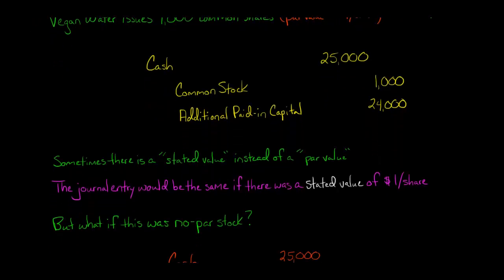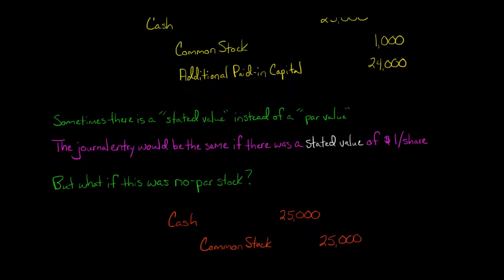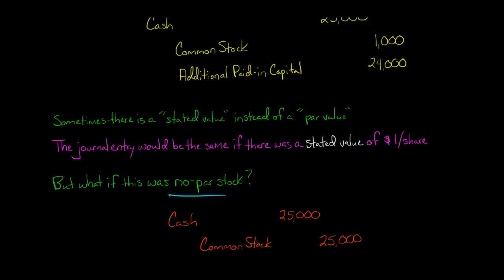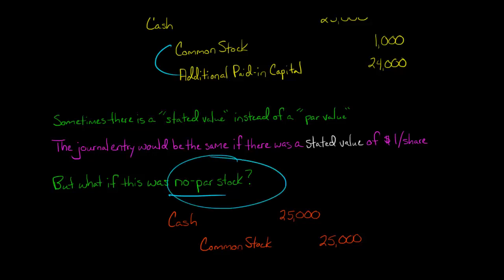If there's true no-par stock, we're not going to have an additional paid-in capital credit. In the previous example the par value was $1 a share, but if there's no par at all, then we're going to debit cash for $25,000 and credit common stock for $25,000 — there is no credit to additional paid-in capital. If you look at the effect on the balance sheet, it is the same whether it's no-par stock or stock with a par value: total assets go up by $25,000 and total equity goes up by $25,000. The only difference is that when there is a par value, you split the equity between the common stock and additional paid-in capital accounts, whereas with no-par stock it all gets booked to the common stock account.